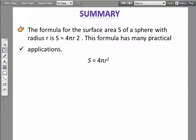Here's our summary: the surface area of a sphere with radius r is S = 4πr². That's a squared, not a normal 2. There's the formula written out as it should be.